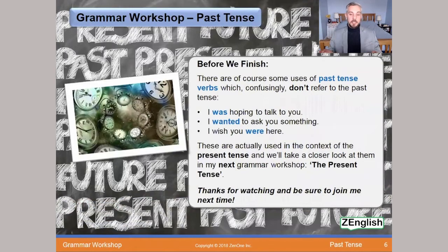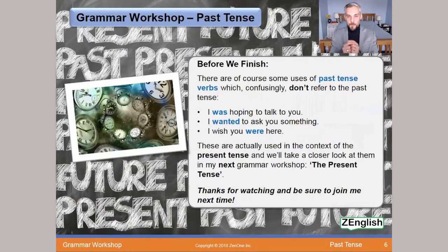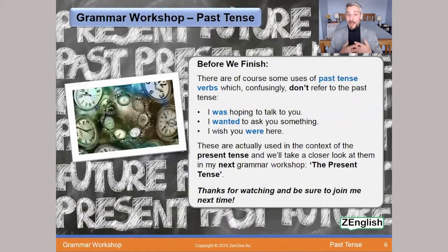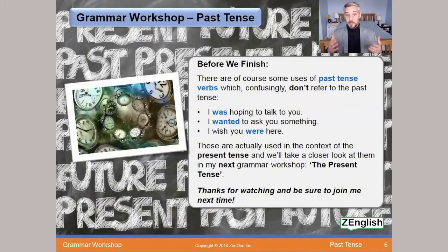So those are the different forms of the past tense. It might seem a bit tricky, but once you understand which situations they're used for, it becomes relatively easy to choose the right one. Before we finish, there are some uses of past tense verbs which, perhaps confusingly, don't actually refer to the past — they're used to refer to the present. Like 'I was hoping to talk to you,' meaning 'I want to talk to you now,' or 'I wanted to ask you something,' or 'I wish you were here,' meaning it would be nice to have you here right now.